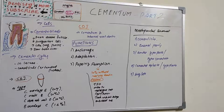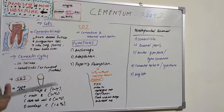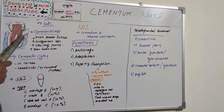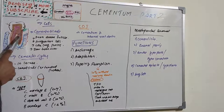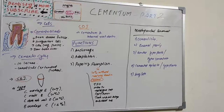Cellular turnover among cementoblasts is low compared with that in osteoblasts. Since bone and cementum are adjacent — with the periodontal ligament between them — the turnover rate is comparatively low in cementum compared to alveolar bone. Furthermore, it appears that cementoblasts are capable of altering the rate of cementum deposition.